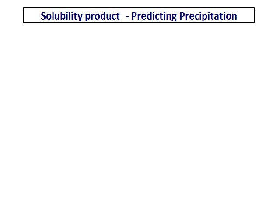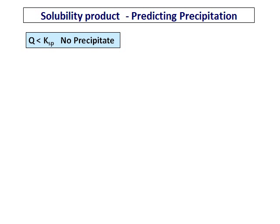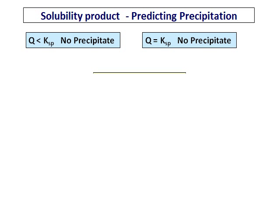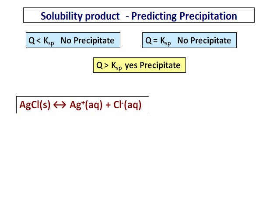We will do some more difficult questions on solubility product. Let's take up how to predict precipitation. If the value of Q is less than Ksp, there is no precipitate. If Q is equal to Ksp, then also there is no precipitate. The condition for precipitation is Q should be greater than Ksp.